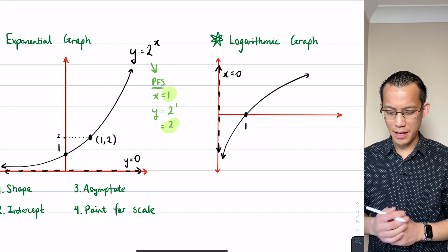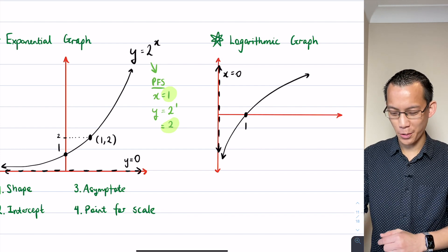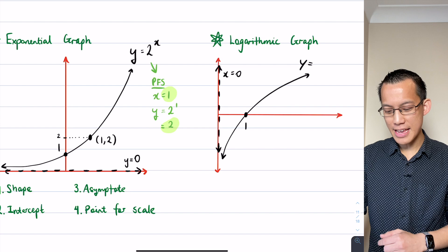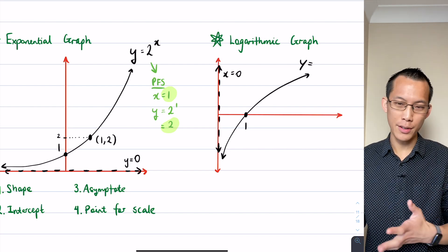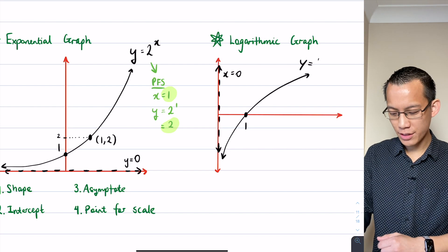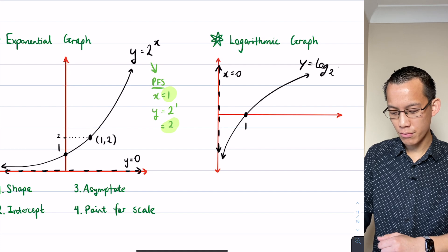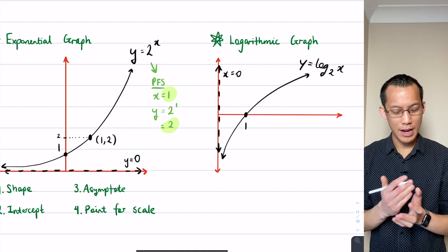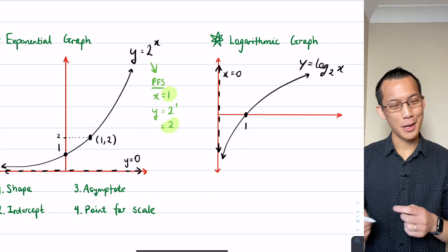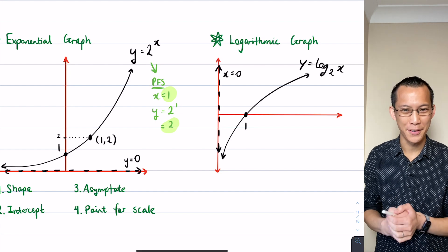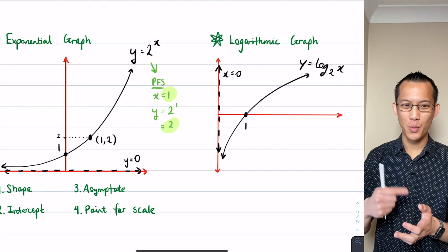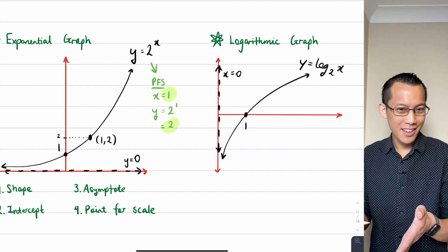Shape check, intercept check, asymptote - lastly my point for scale. I should have mentioned I haven't told you what the equation of this logarithmic graph is. Let's make it the exact opposite, the exact inverse of the previous exponential we did: log base 2 of x. The reason why I do that is purely because I'm lazy - I can use that point for scale that I worked out before.